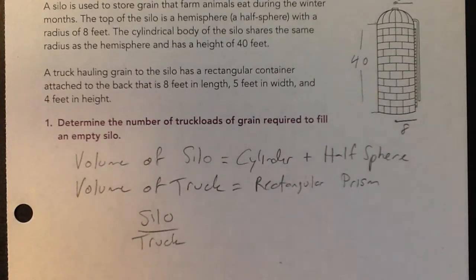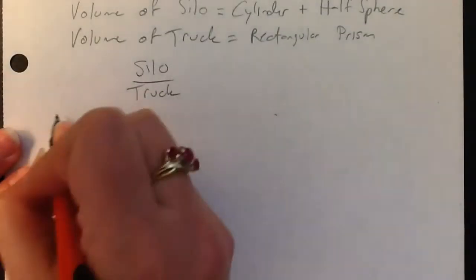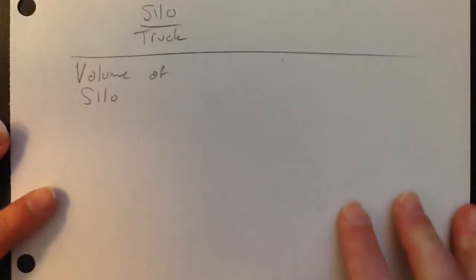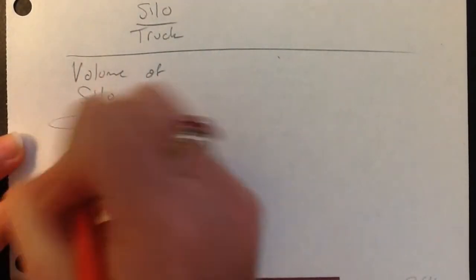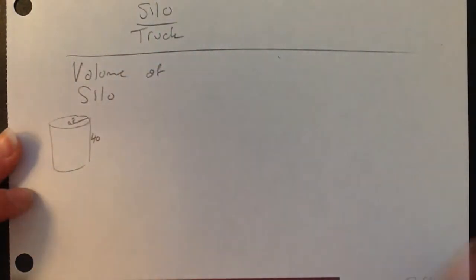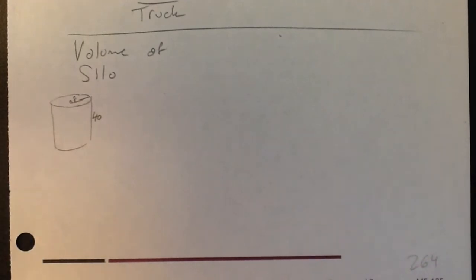So let's start with finding the volume of the silo. Now I'm going to be showing you a tool that will greatly cut down the amount of work you need to do. So let's start by just writing out what it is we're doing. So the cylinder is 8 by 40. Now you could go through the whole process of putting that into the formula and all that sort of stuff. But let me show you something you can do instead.